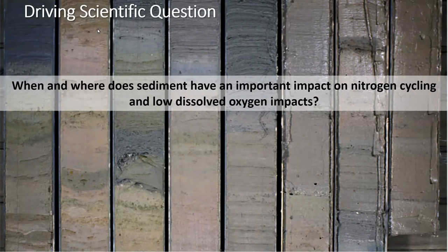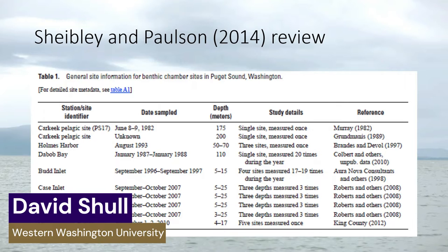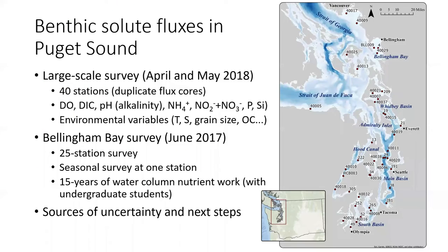The key question is when and where do sediments have an important impact on nitrogen cycling and low dissolved oxygen impacts. Most of the work has been done in a few shallow inlets, with a smattering of samples from deeper sites, but nothing large scale — certainly not enough to estimate the average effect of sediment-water exchange on nutrient cycling and dissolved oxygen consumption. This is a significant gap in understanding how sediments affect water quality in Puget Sound, and with that in mind, we set out to begin to fill some of that gap.